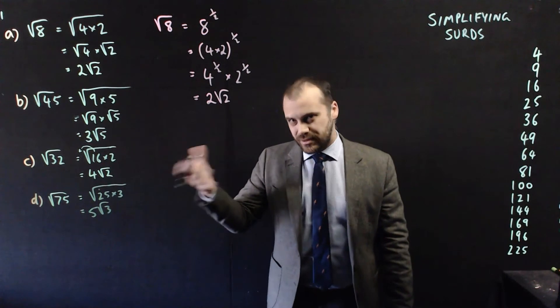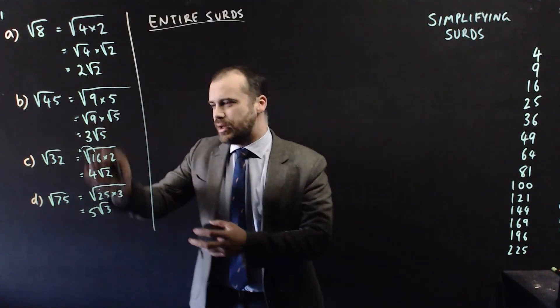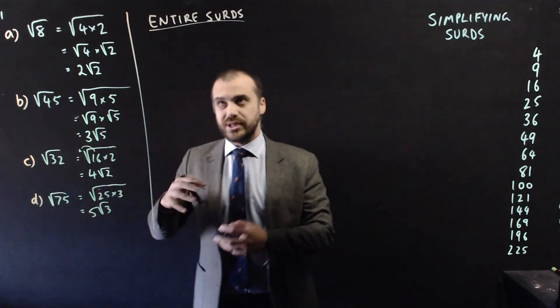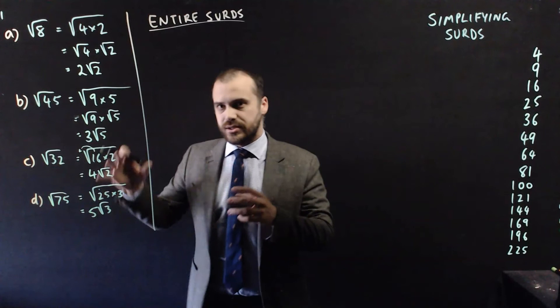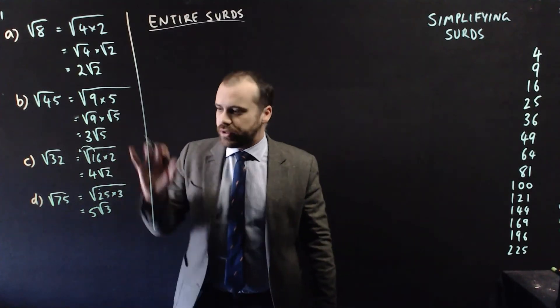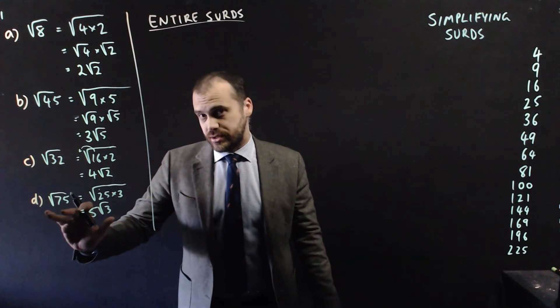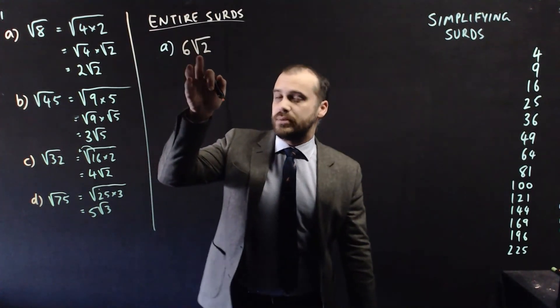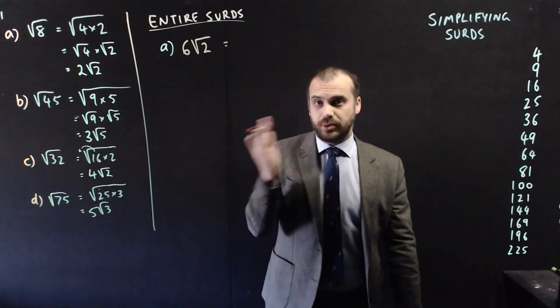But we can also kind of do that in reverse. So these things that I've worked towards are called simplified surds, but the things that I started with are called entire surds, because the entire number is under the square root sign. So what if we were given a simplified surd and we wanted to express it as an entire surd? If we were given something like 6 times root 2.